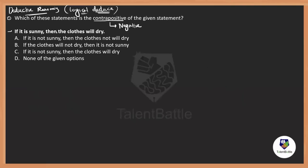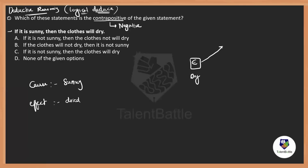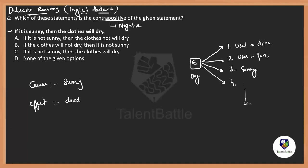There are two points in this statement: one is the cause and the other is the effect. The cause is being sunny and the effect is the clothes getting dried. Now, for an effect to happen there might be n number of causes. Maybe not only because of sun — the clothes may dry because you used a dryer, or a fan, or any number of different possibilities.